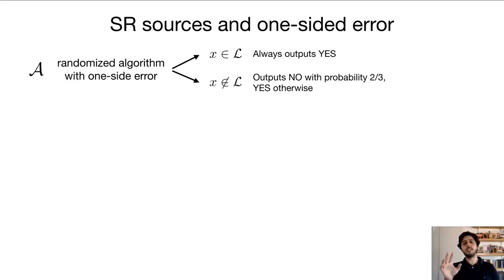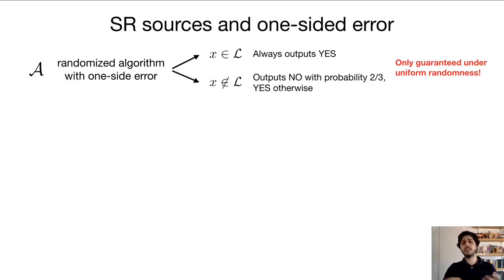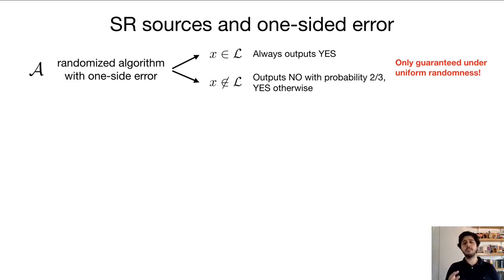In general, this property is only guaranteed under uniform randomness, so maybe if we give a weak source to the randomized algorithm, it will always be incorrect with defective randomness. However, there's a very simple way of modifying this algorithm so that even if we give it a SoMa random source instead of uniform randomness, it will still be a one-sided error algorithm for deciding this language. The way this works is very simple: we have our SoMa random source and we just run the original algorithm several times — first on input x using the randomness from the first block of the SoMa random source, then using the randomness from the second block, and so on until we've run it through all the blocks.